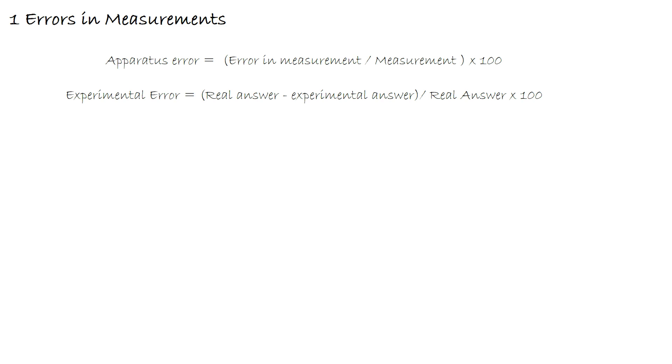The second error we're going to look at is experimental error, which is defined as the real answer to an experiment minus the experimental answer divided by the real answer.